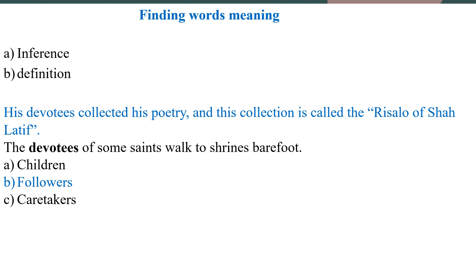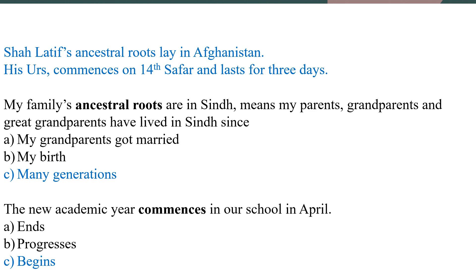ان دونوں sentences سے آپ کے ذہن میں ایک definition آ گئی: ان دونوں activities کے پیچھے کچھ خاص ہے — ایک کتاب تشکیل دینا اور shrine کی طرف ننگے پاؤں سفر کرنا۔ یہ definition option B 'followers' کے ساتھ بہت زیادہ match کرتی ہے، کیونکہ followers اس طرح کے کام کرتے ہیں — caretaker یا بچے نہیں کرتے۔